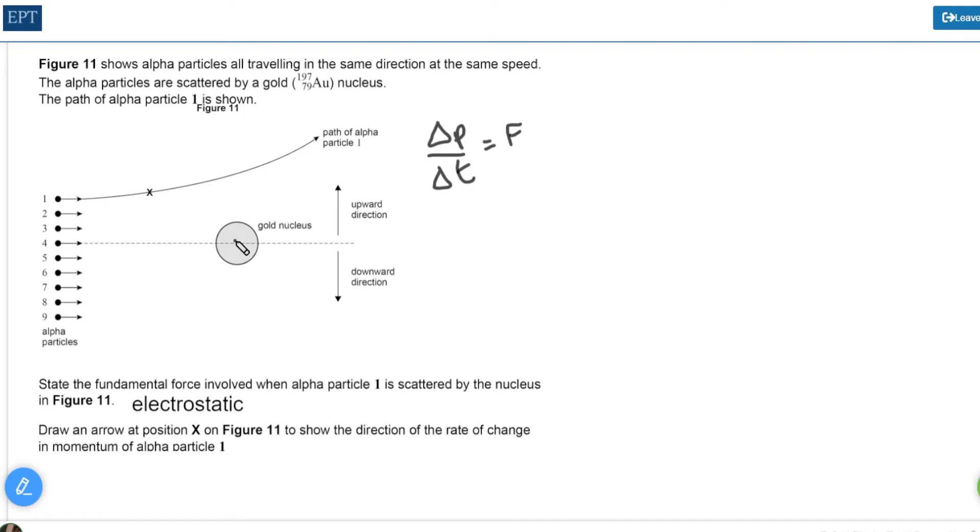Since force is a vector and momentum is a vector, if we know the direction of the force we also know the direction of the rate of change of momentum. The direction of the force between the gold nucleus and x is radially outwards from x.